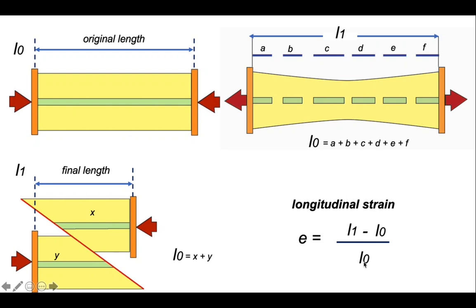Notice we can do the same thing for the contractional faulted case on the left-hand side, because we don't get to see the original geometry. But from the final state, we can use those two segments of the green layer, X and Y, and add those together to find L0.